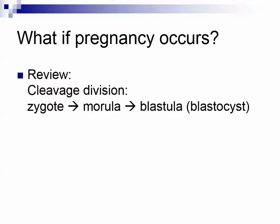Moving along — remember there were two possible endings to our female hormonal cycle. We explored what happened if a woman doesn't get pregnant, but what if pregnancy occurs?